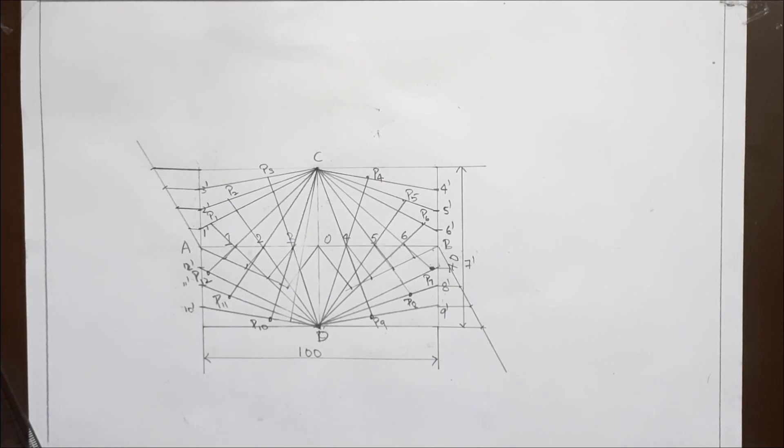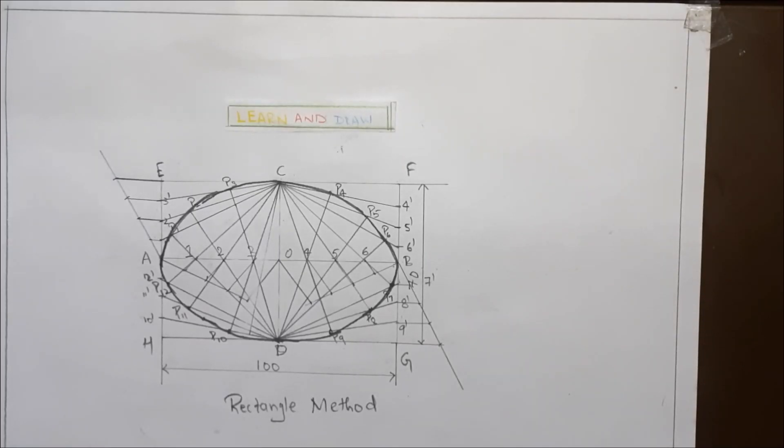After joining all the points, we get the ellipse. So this completes ellipse by rectangular method.